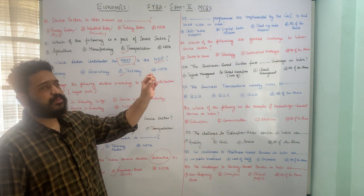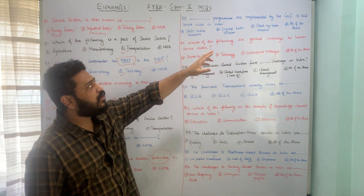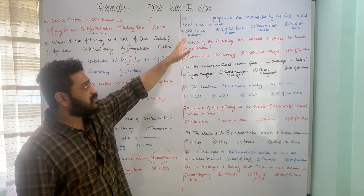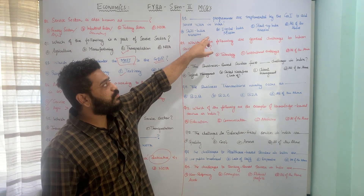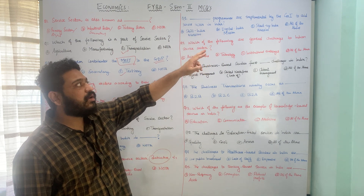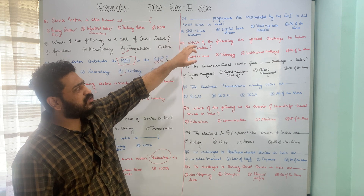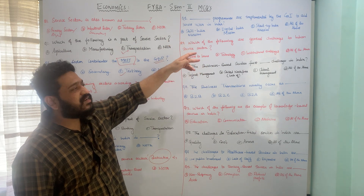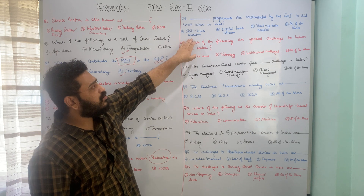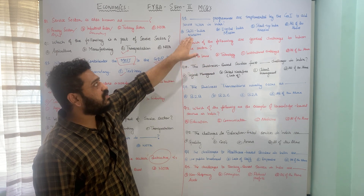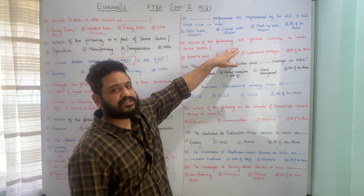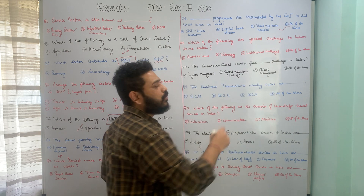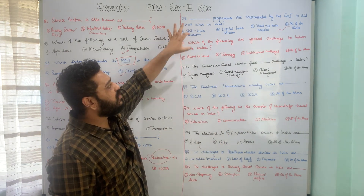Which programs are implemented by the government of India to aid the service sector? Whether it is A. Skill India Mission, B. Digital India Mission, C. Startup India, or D. all of the above. All three missions were implemented by the government of India to aid the service sector. Therefore, option D, all of the above — Skill India Mission, Digital India Mission, and Startup India — is the correct answer.